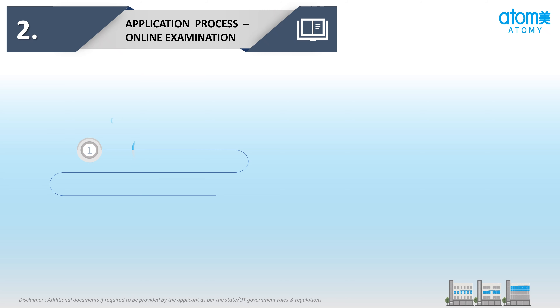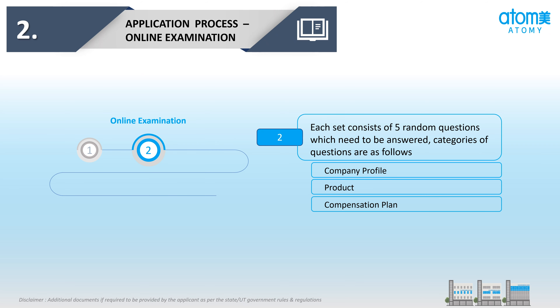दूसरा Stage है Online Examination। हर सेट पे 5 Random Questions होंगे जिनका उत्तर देना अनिवार्य है। Questions की Categories इस प्रकार हैं: Company Profile, Product, और Compensation Plan।